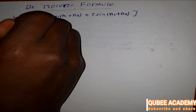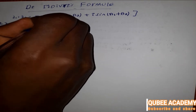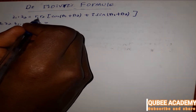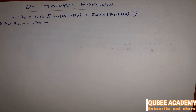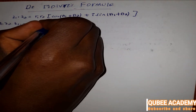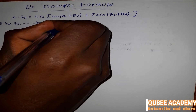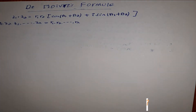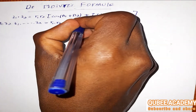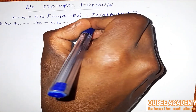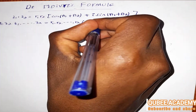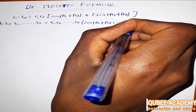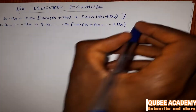So we can write Zn as a product, extending the polar multiplication to n complex numbers.